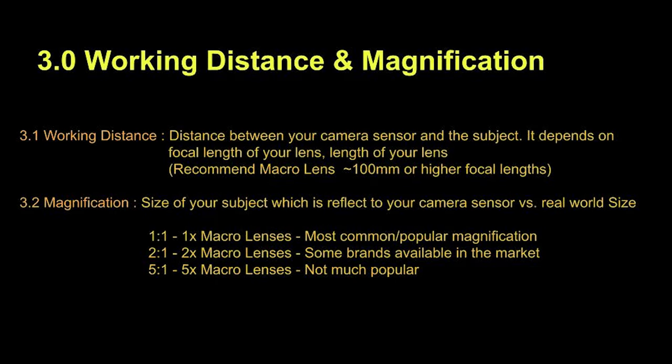Then we will move to working distance and magnification. Working distance is the distance between your camera sensor and the subject — it depends on the focal length and the length of your lens. I would recommend a macro lens with 100mm or higher focal length. Magnification is the size of your subject reflected on your camera sensor versus its real-world size. 1-to-1 or 1x macro lenses are the most common and popular magnification.